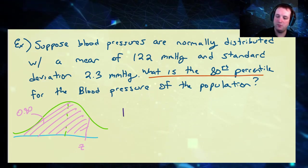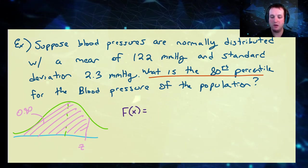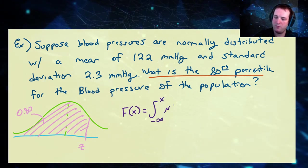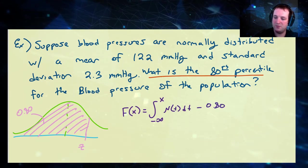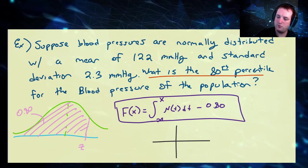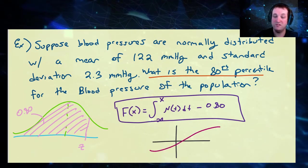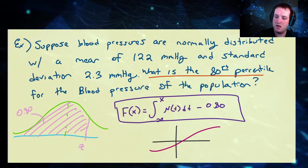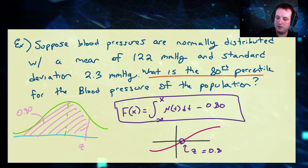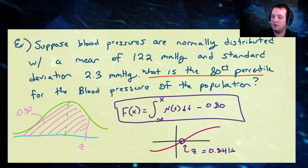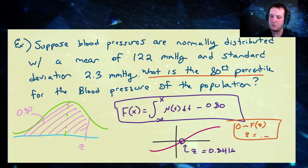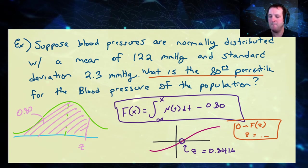We define capital F as the integral from minus infinity to x of the standard normal distribution minus 80%. This gives us some number greater than zero, and looking at this graph we find the z-score is approximately equal to 0.8416. You can also use '0 ~ F(z)' in Desmos and then z will be equal to that with some accuracy. But this is not a blood pressure — this is the z-score for the blood pressure that we want.